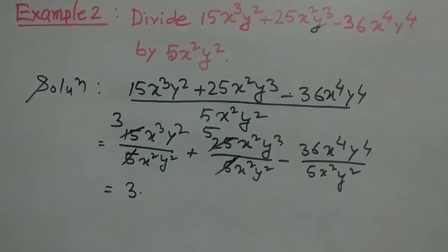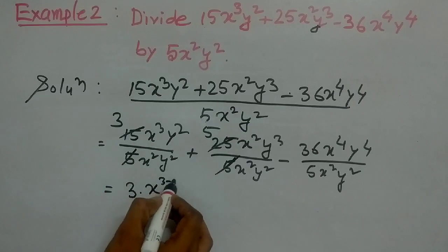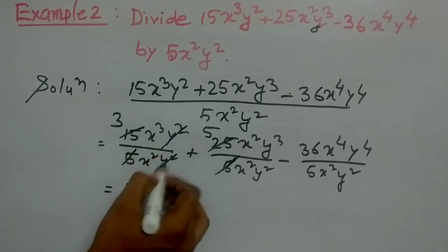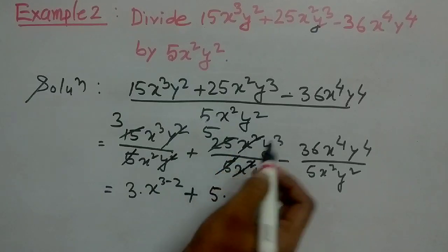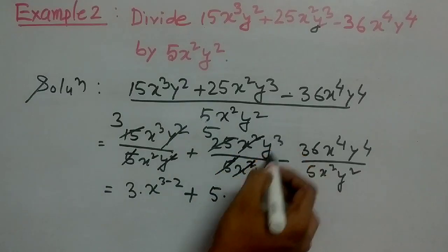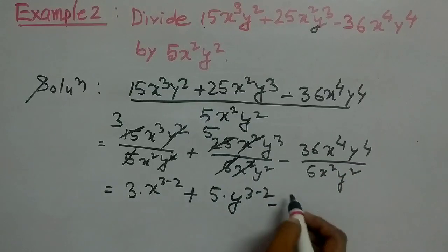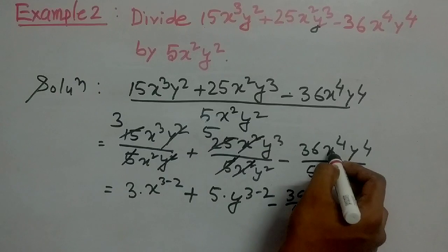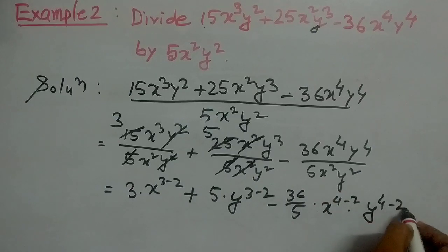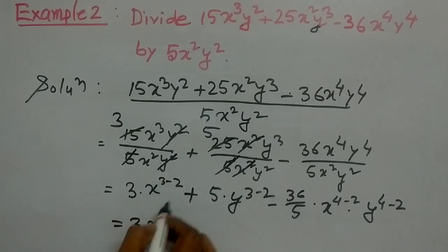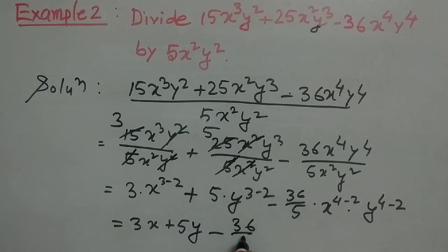So this is 3. Now for the x terms: the power is 3 and 2, so x to the power 3 minus 2. The y squared and y squared will be cancelled. Plus 5: the x squared and x squared cancel, and y to the power 3 minus 2 gives y to the power 1. Minus 36 by 5: x to the power 4 minus 2, and similarly y to the power 4 minus 2. So the result is 3x plus 5y minus 36 by 5 times x squared y squared.